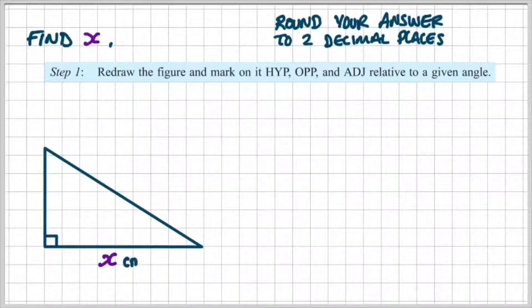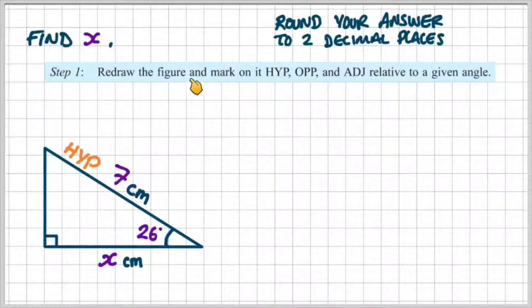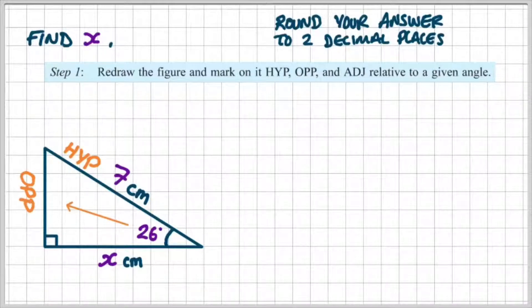So step one, we're going to redraw the figure and mark on it the hypotenuse, the opposite and adjacent relative to the given angle. We know the opposite of the right angle is the hypotenuse, opposite theta is the opposite, and that leaves us with the adjacent.